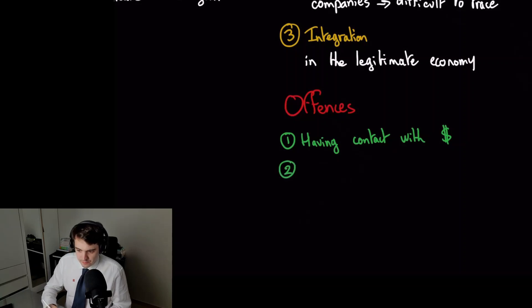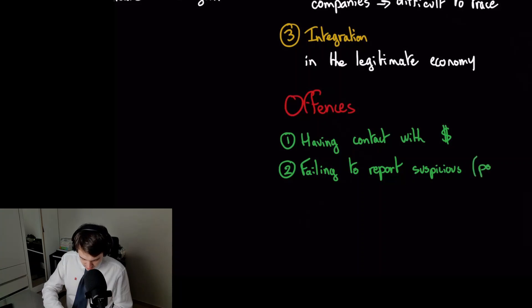Number two: failing to report about it. So when you know it's dirty money but you do not report any suspicions where you're suspicious, right, you're not sure, to police, basically to tell the authorities. If you didn't report it, you will go to jail.